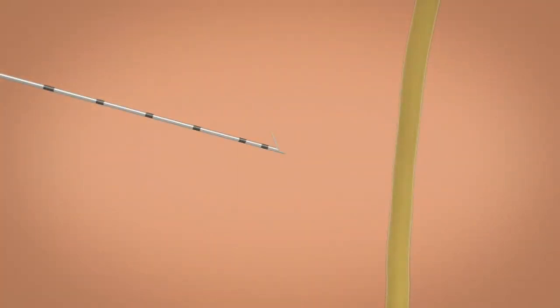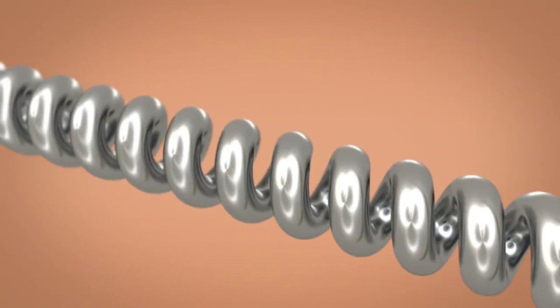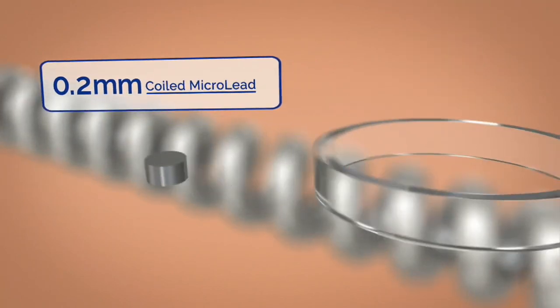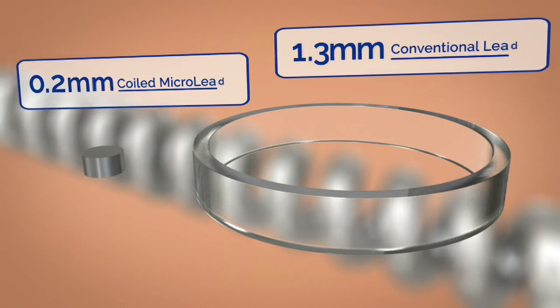The micro lead is preloaded into a 20 gauge introducer needle facilitating its ultrasound guided placement up to 2 cm remote to the targeted nerve. At 0.2 mm, the percutaneously delivered micro lead boasts the pain management industry's smallest diameter lead.